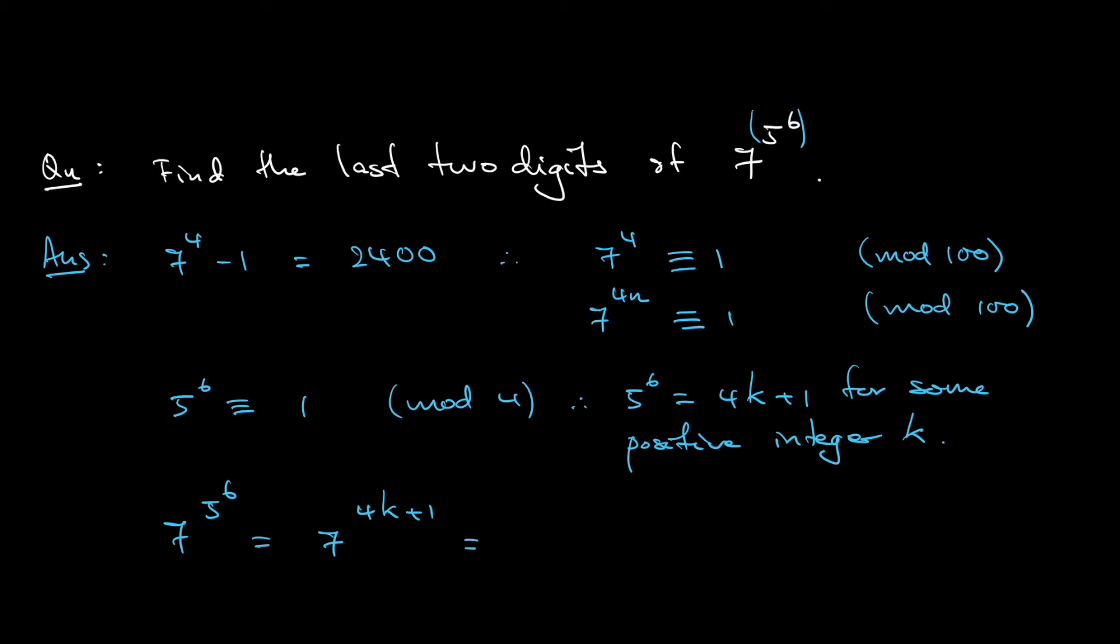Okay, so that is equal to 7 multiplied by 7 to the power of 4k. Okay, if you do this modulo 100, okay, 7 is still congruent to 7,